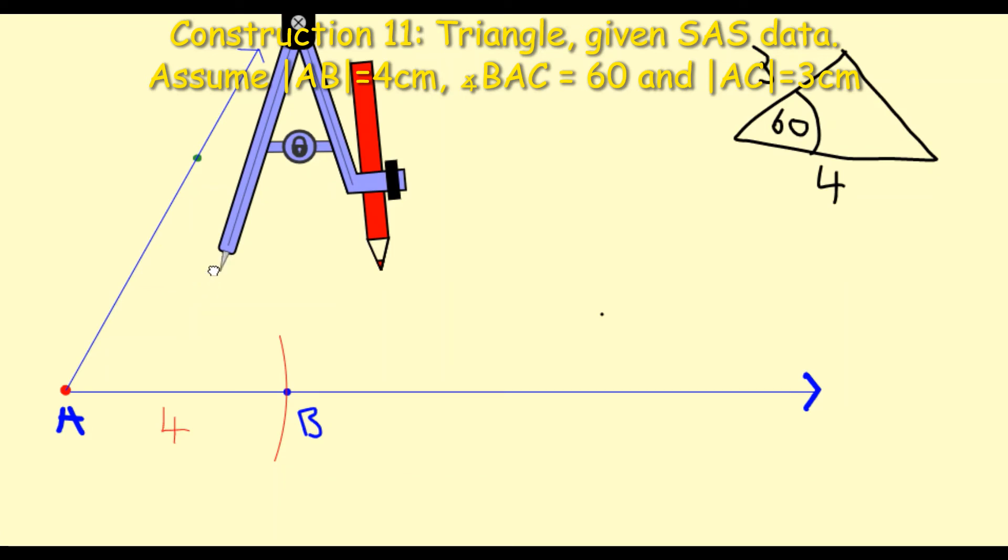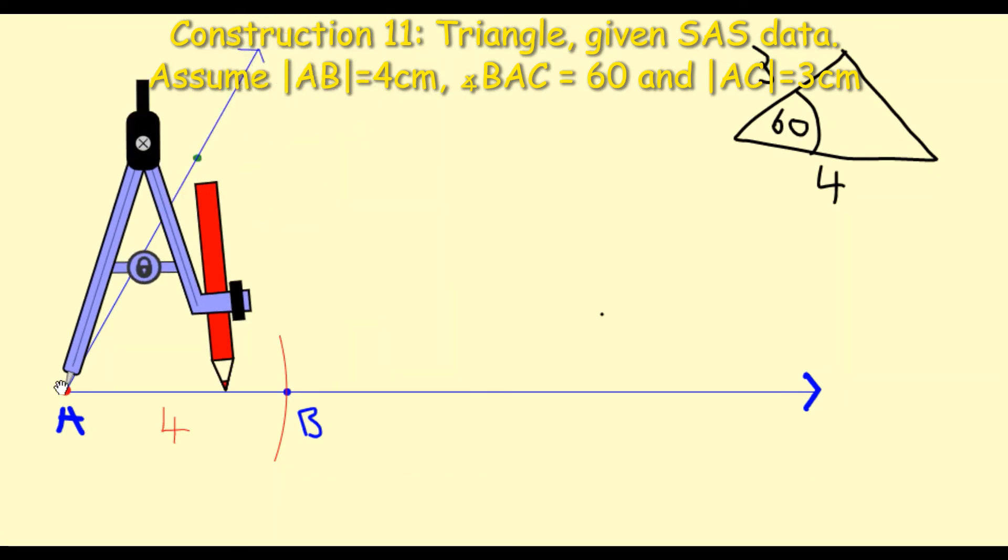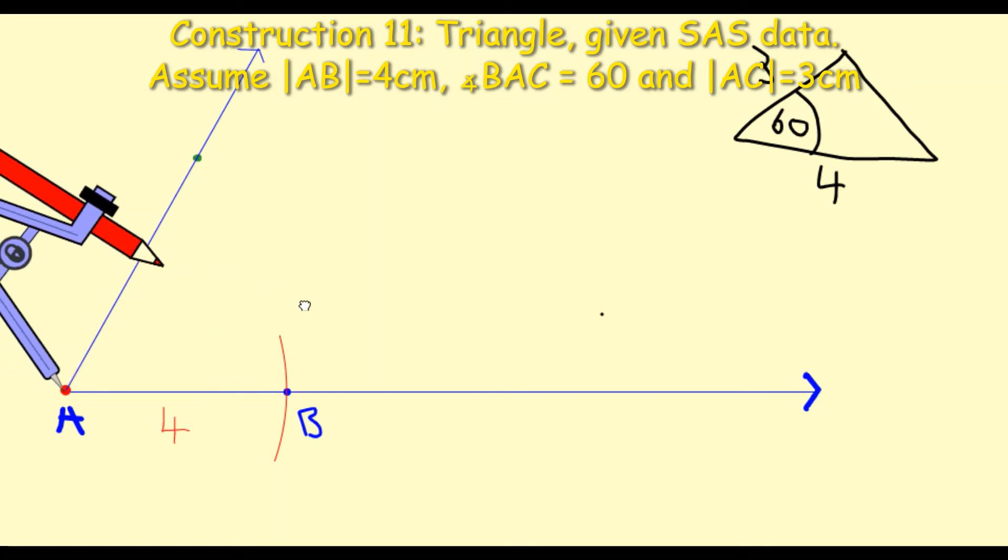I bring the nib of my compass down to A. So we're always using the point A for this question. And basically what I'm going to do here now is I'm going to draw an arc on this new ray. I'm drawing my arc here, and you can see that it isn't actually going through that green dot. That green dot was just a guide point. And now I remove my compass.